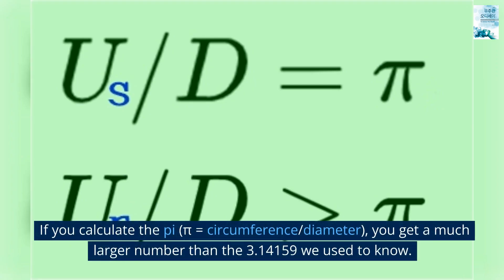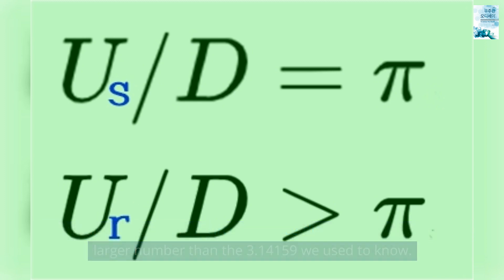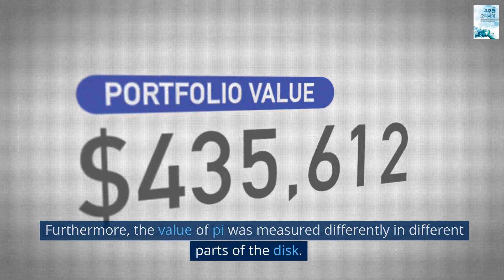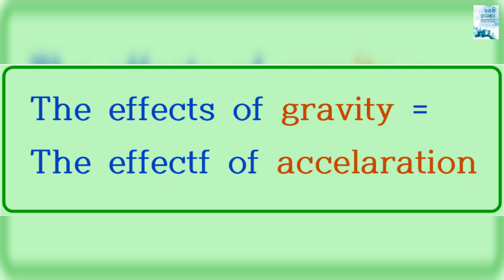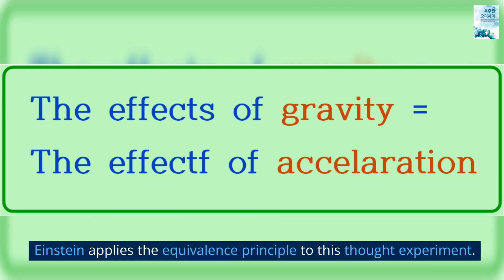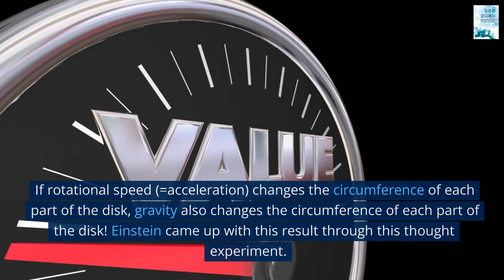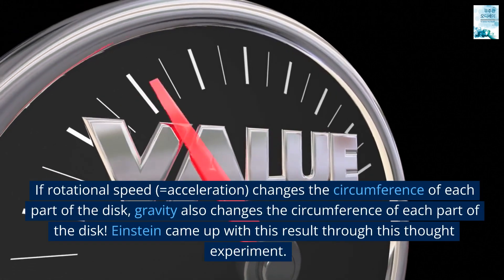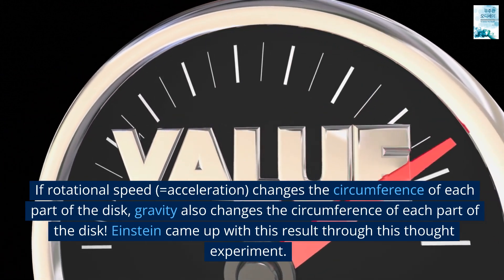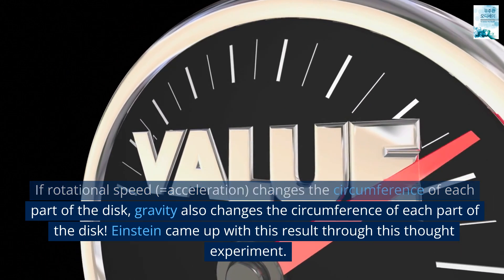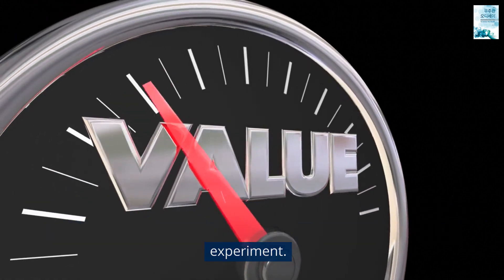If you calculate pi — pi equals circumference over diameter — you get a much larger number than the 3.14159 we used to know. Furthermore, the value of pi was measured differently in different parts of the disc, because the tangential speeds are different. Einstein then applies the equivalence principle to this thought experiment: if rotational acceleration changes the circumference of each part of the disc, gravity also changes the circumference of each part of the disc.